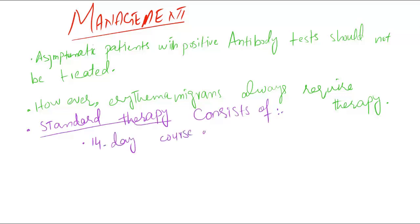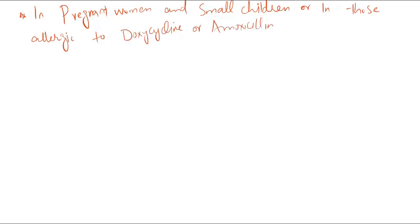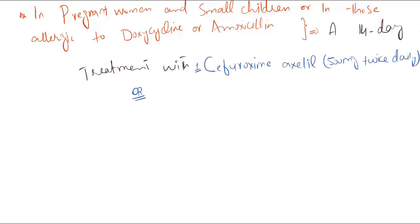Standard therapy consists of a 14-day course of doxycycline 200 mg daily or amoxicillin 500 mg three times daily. In pregnant women and small children, or in those patients who are allergic to amoxicillin or doxycycline, a 14-day treatment with cefuroxime axetil 500 mg twice daily or erythromycin 250 mg four times daily may be used.